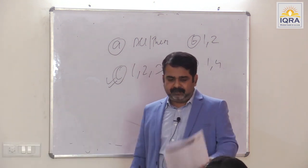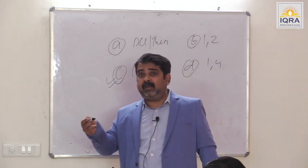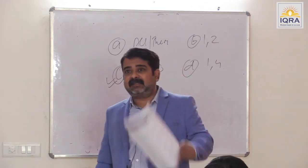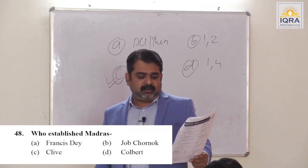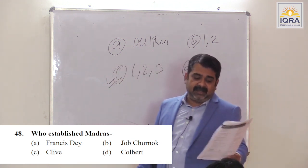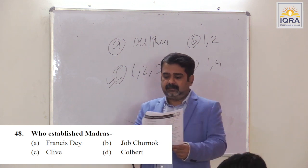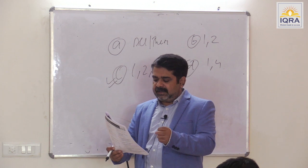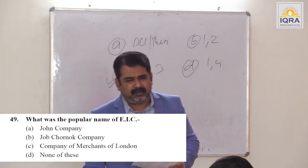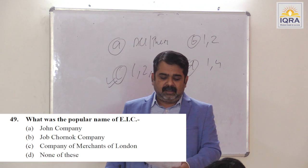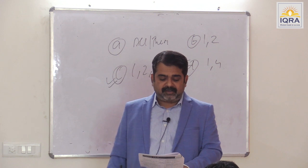How did Robert Clive become a hero? In the Second Anglo-Carnatic War, he succeeded at the Arcot episode. Who established Madras? Francis Day in 1639 — Madras was taken from the king of Chandragiri on lease. Answer is A. What was the popular name of EIC? Very important — this company ruled for 100 years. Answer C — Company of Merchants of London.